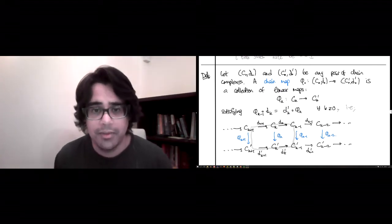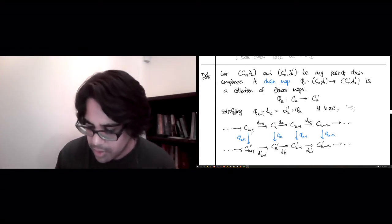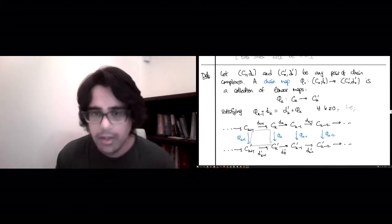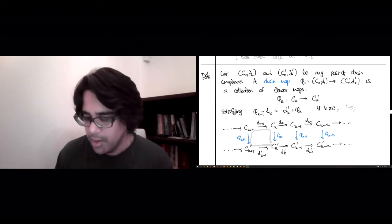In fact, in this case, they'll both give 0 because they require you to go through the boundary maps twice. But more interestingly, each square, and this is non-trivial because that won't be 0. Those two paths from C_{k+1} to C'_k give you the same linear map.